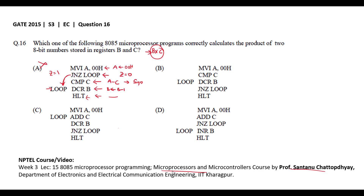Coming to Option B, the first instruction loads the accumulator with 00H. Then compare C performs A minus C, which affects the sign flag. After that, decrement B reduces B by 1. This instruction affects all flags, so it checks the zero flag. With jump-not-zero, if the contents of B are non-zero, it goes back to the loop. This loop repeats until B equals 0, then the halt instruction executes. Here also there is no multiplication operation.